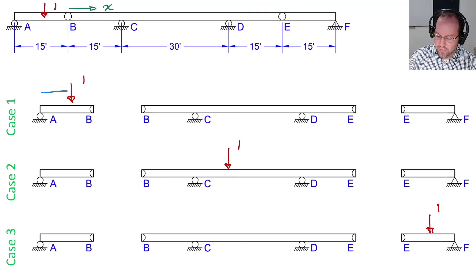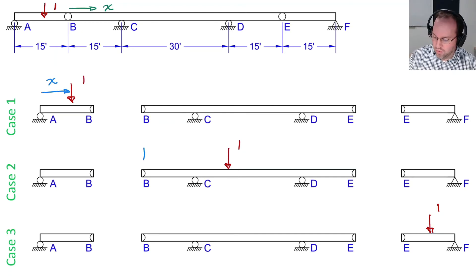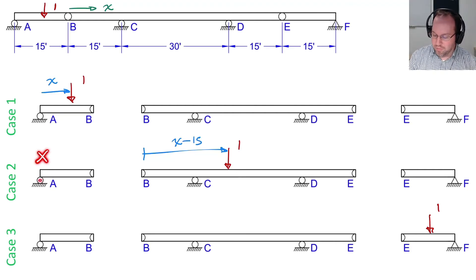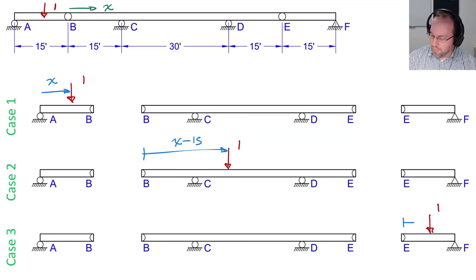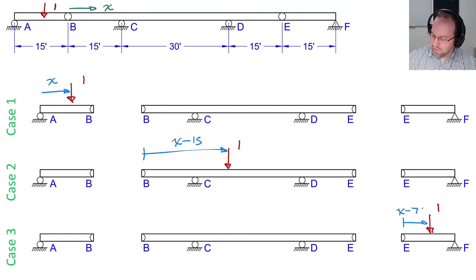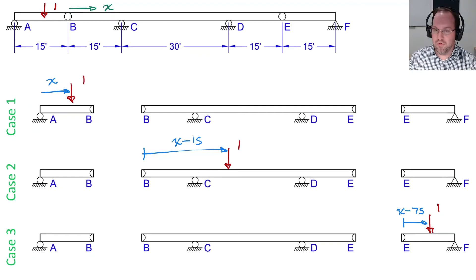Let's draw the dimensions for the position of that load. In case one, the load is positioned at X away from point A. In case two, the distance from point B is X minus 15, because X is normally measured from point A and we subtract off the 15-foot distance to point B. Lastly, the position of the load in EF for case three is going to be X minus 75. So now we can find the reaction forces for each of these cases, and it will look different for each case, just because that load is moving into different free body diagrams for my structure.